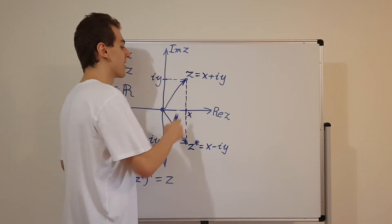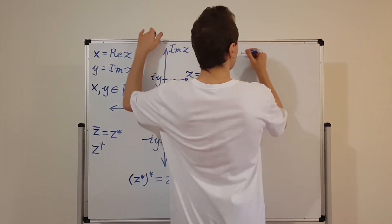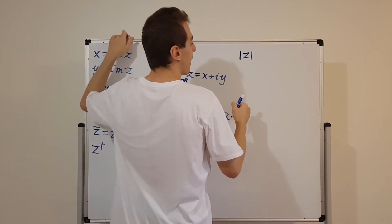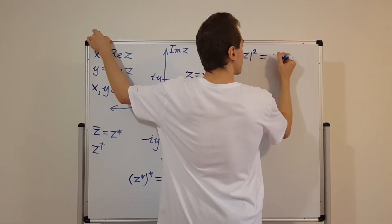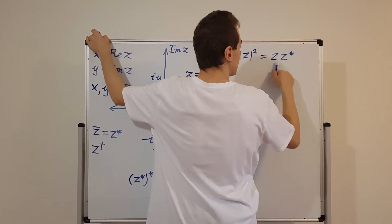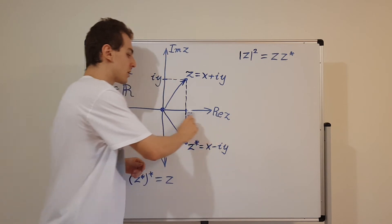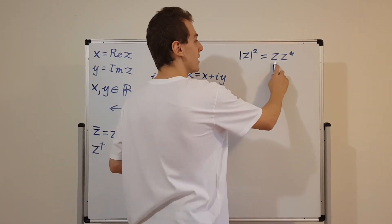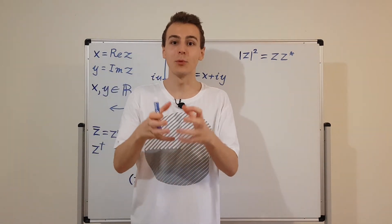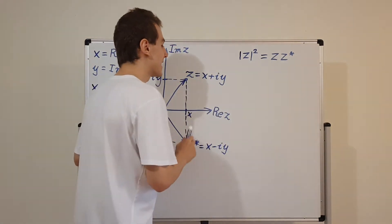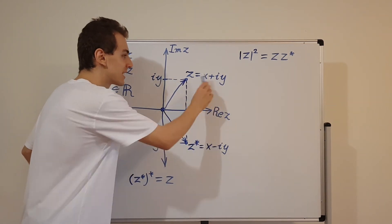Another thing I want to show you is how you can get the magnitude of this complex number. Let's take the magnitude squared because that's easier to calculate. We can define the magnitude squared as z times z star. For real numbers, z is equal to z star, so this is the same as squaring — multiplying the number by itself. But for complex numbers in general, the complex conjugate is not equal to the number itself, since some imaginary component gets negated — so these are not necessarily equal.